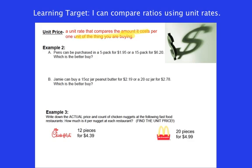Here I've got pens that I'm going to buy. I can either buy a 5-pack or a 15-pack. 5-pack is $1.95. I could pay more and get 15 pens instead of 5 pens. So let's start by setting up the rate just like we did before.